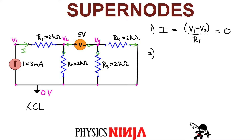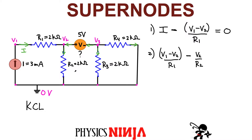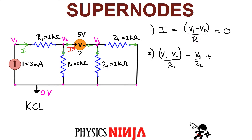Now we move on to node number 2. Whatever current flows in has to equal the current flowing out. I have the current (V1 − V2)/R1 flowing in, and a current flowing out down through R2, which is V2/R2. Now there's a problem: how do we define the current flowing through the voltage source branch into node 2? I'll call this current I star. So applying standard nodal analysis, I have (V1−V2)/R1 − V2/R2 + I_star = 0 for equation two.